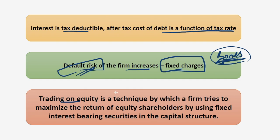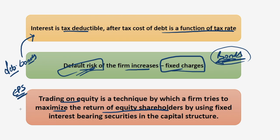The next concept is trading on equity. The main motive of any organization is to maximize the return of equity shareholders, that is EPS. To maximize equity shareholder returns, a firm tries to use debentures or bonds as part of its capital structure since interest is tax deductible. But it must balance this — on one side taking on debts and bonds, and on the other side taking care of equity shareholders. This balancing act is known as trading on equity, and with this we have discussed the major concepts related to long-term debt, its advantages and disadvantages.